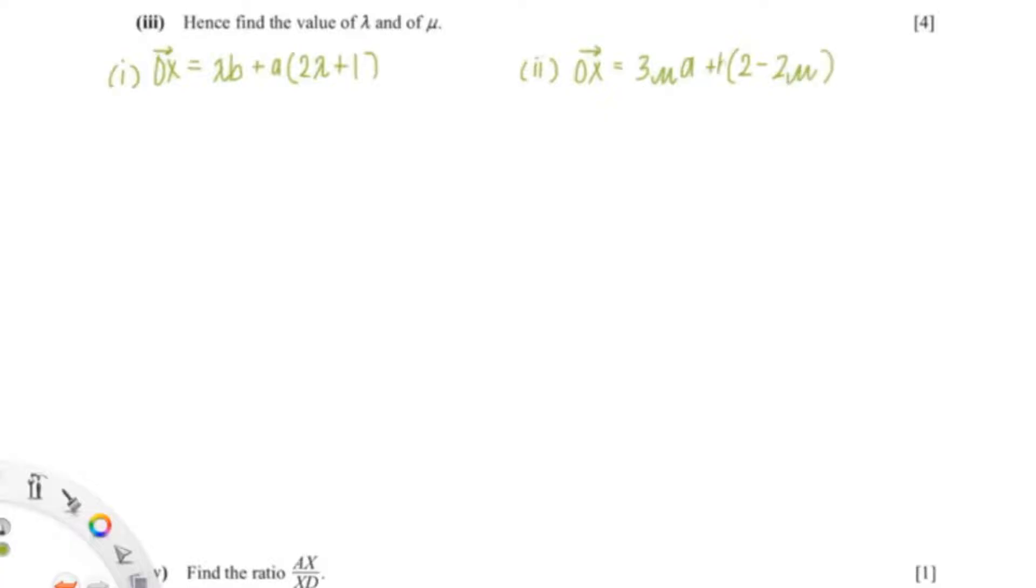Moving on to the next question. It says hence find the value of lambda and mu. So we know that from the first question OX equals to lambda B plus A times 2 lambda plus 1. And from the previous question OX equals to 3 mu A plus 2 minus 2 mu times B.